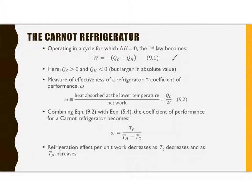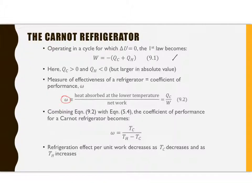The net work is going to be positive because it's into the system. The heat transfer at the cold temperature is going to be positive, meaning it's into the system at the cold temperature. And QH is negative at the high temperature, meaning it's lost at the high temperature. Another difference is the way we measure effectiveness. We use the coefficient of performance, omega. This is what we get out of the cycle divided by what it costs. In this case, we are wanting to absorb heat from our food in our refrigerator — heat absorbed at the lower temperature is our goal. What we put in is the net work or power, so QC over W is this ratio.